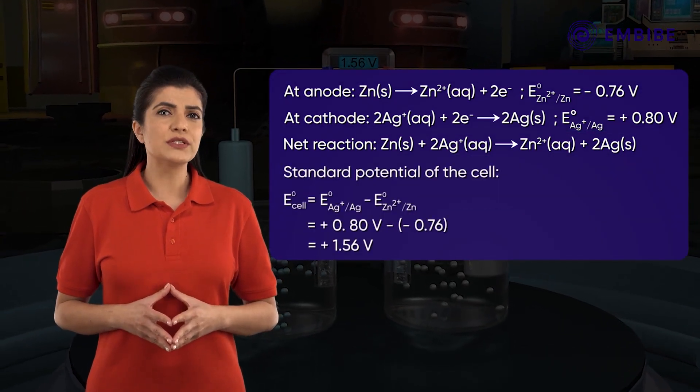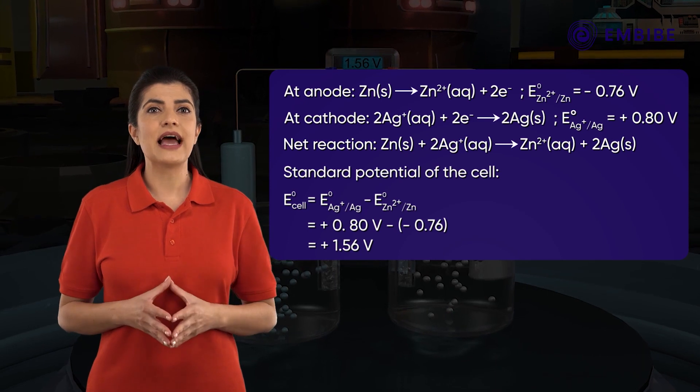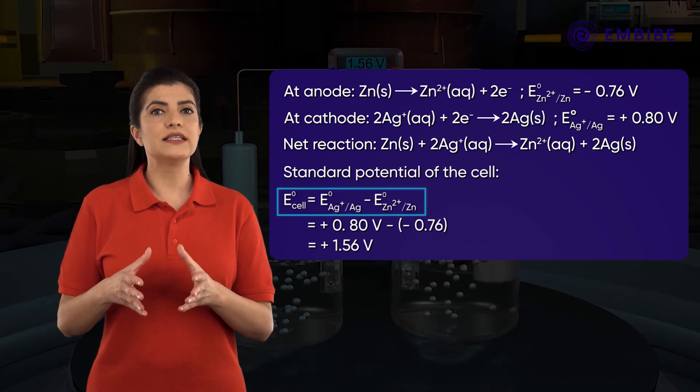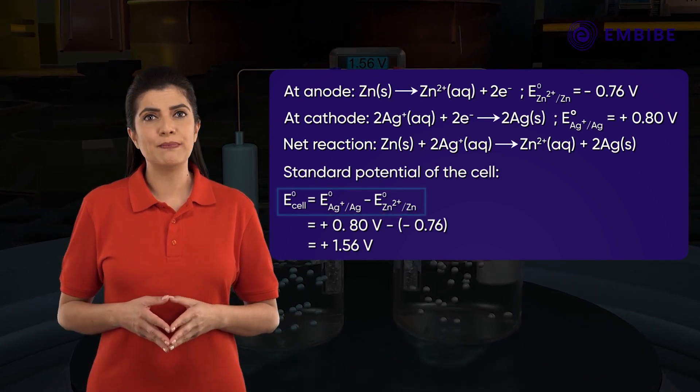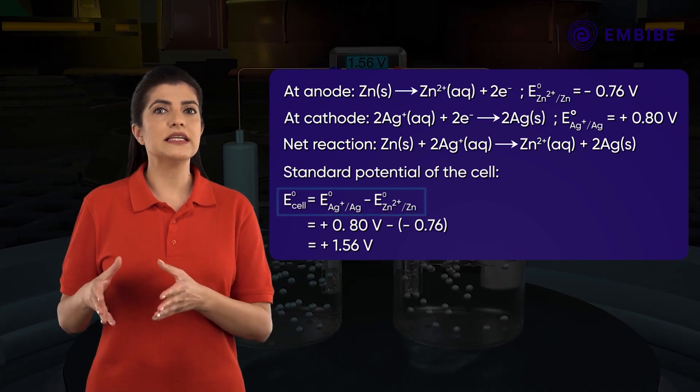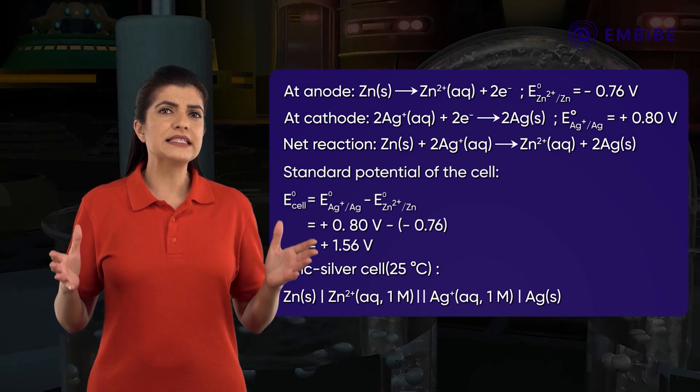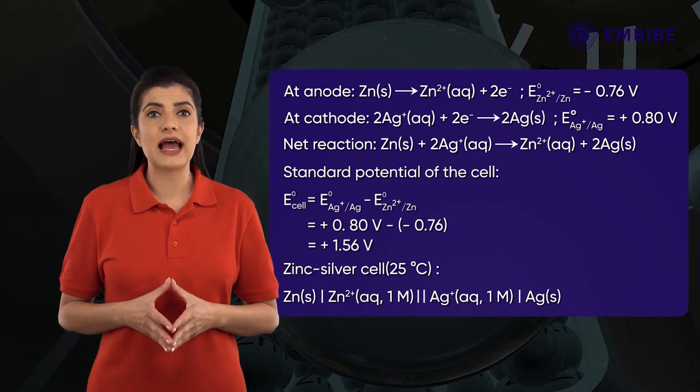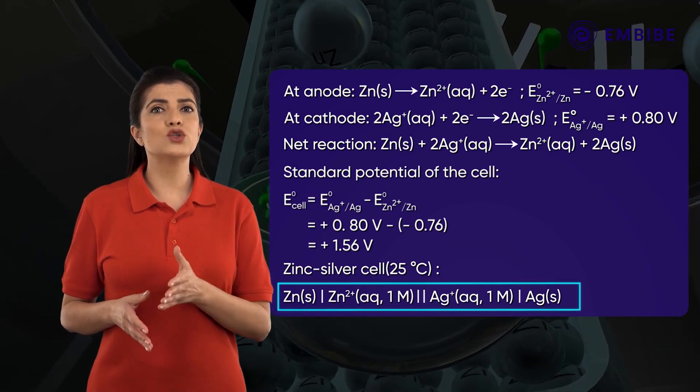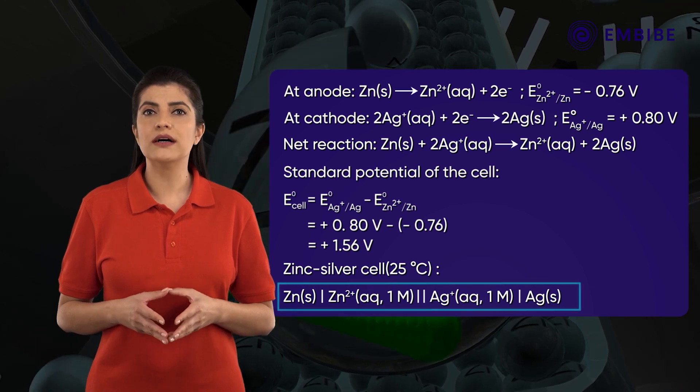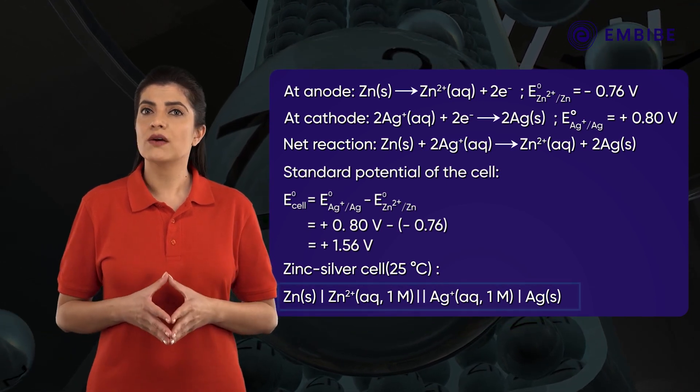The standard potential of this cell is given as E⁰ cell equals E⁰ Ag⁺/Ag minus E⁰ Zn²⁺/Zn. The zinc-silver cell can be represented as Zn | Zn²⁺ (aqueous, one molar) || Ag⁺ (aqueous, one molar) | Ag.